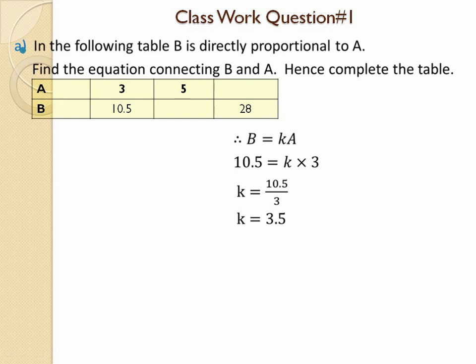We are starting question number one, a complete question on direct proportion. The value of k is calculated in advance. The question states: in the following table, b is directly proportional to a, so the equation is b = k × a. Find the equation connecting b and a, then complete the table. The table gives values of a as 3, 5, and blank, and values of b as 10.5 and 28, with the central value blank.